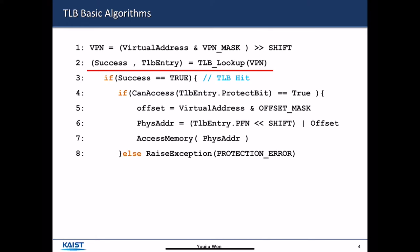Let's review the TLB basic algorithm. First, it extracts the virtual page number and then looks up the TLB for the given virtual page number. If it succeeds, then it checks the protection to determine whether it can access the page or not. If it is allowed, then it accesses the memory.